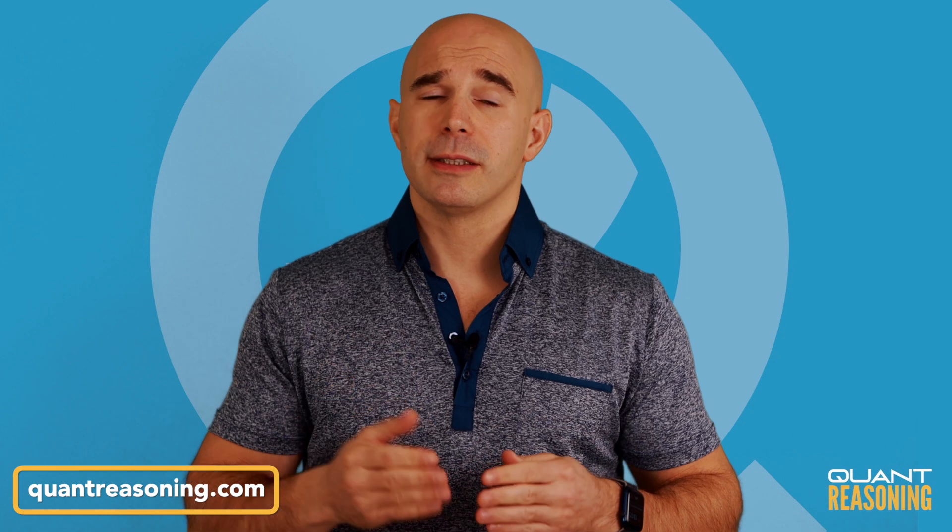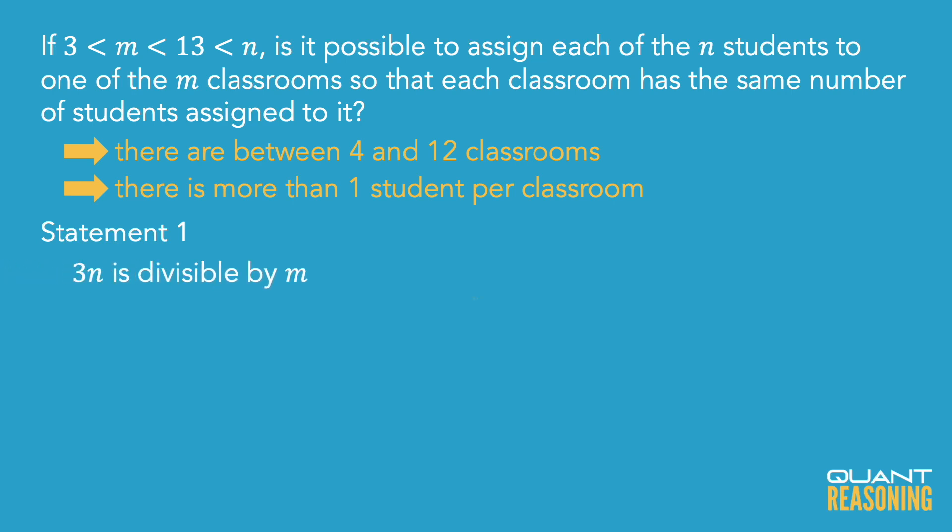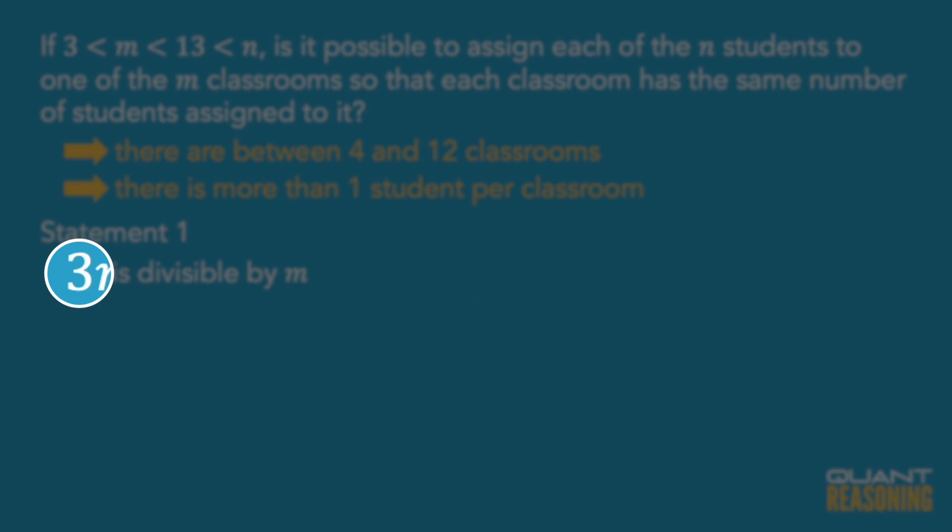I don't think there's much more left to do at the question stem level. We're just going to go into the statements and start evaluating each on its own. Statement one says: if you had three times as many students, you would be able to assign them evenly with the same number of students in each classroom. We're supposed to look at that and say, okay, so we know that if we had three times as many students it would all work out. But we want to know whether with the actual number of students it's going to work out. Our job is to try to prove insufficiency — to imagine a case in which it would work out and another case in which it wouldn't. But I don't want to just test cases, because then I'm not really advancing my quantitative reasoning.